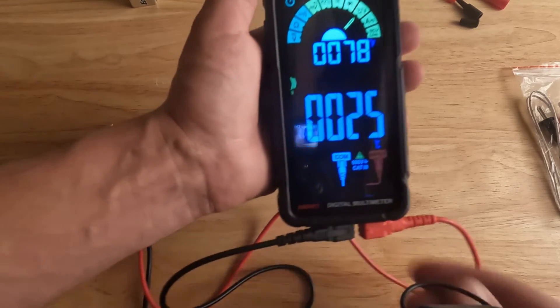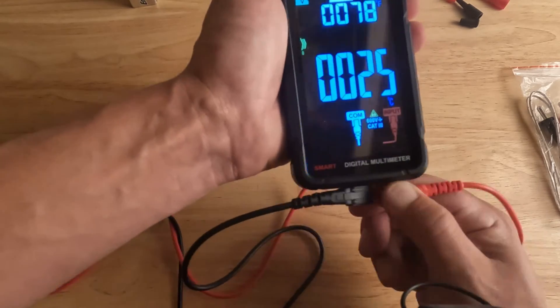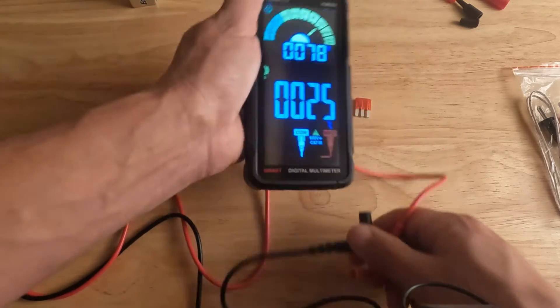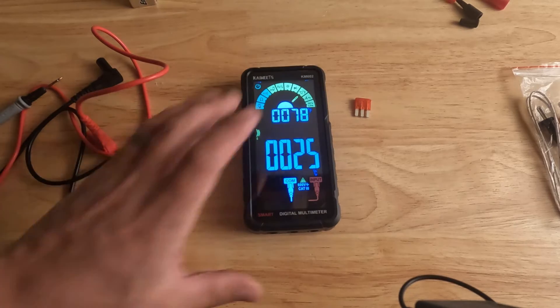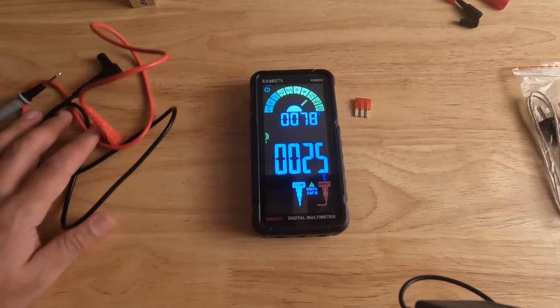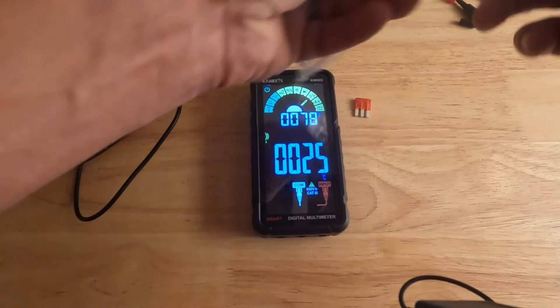Here's our temperature. You can see right now it's just reading the room temperature. It's reading the room temperature of 78 degrees Fahrenheit, 25 degrees Celsius. But if we take this pack.